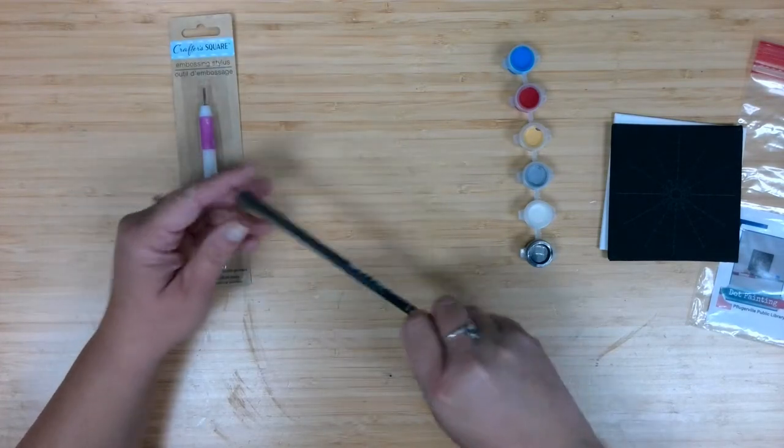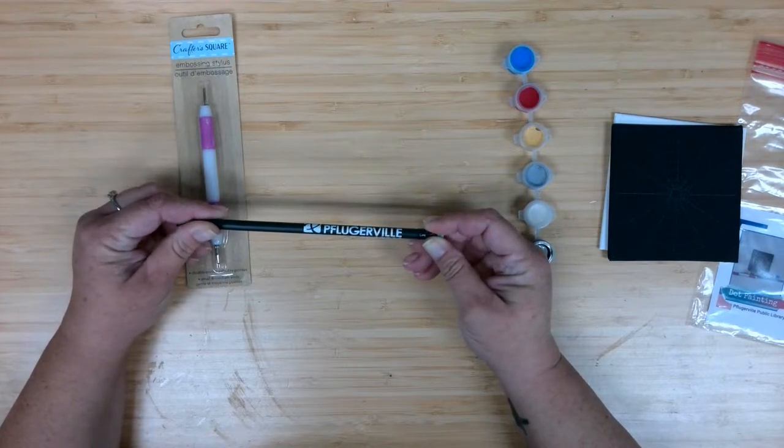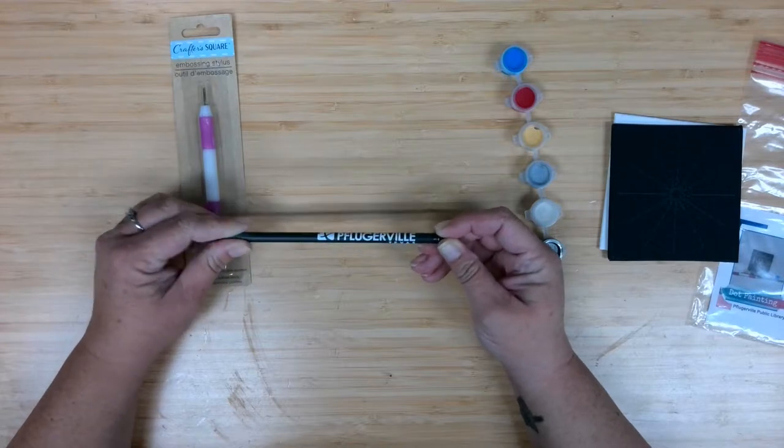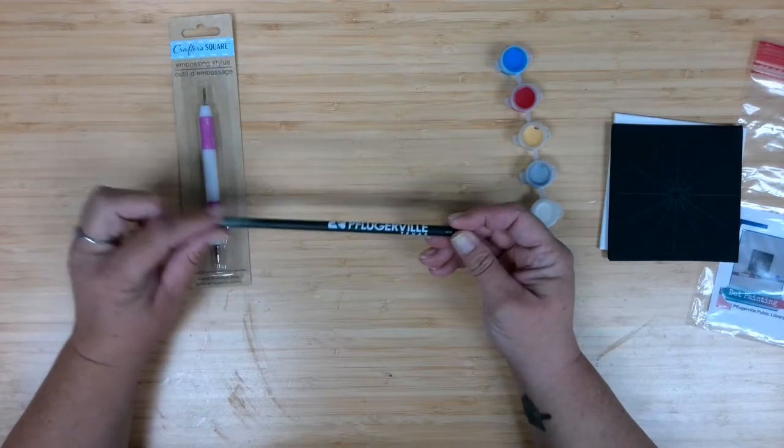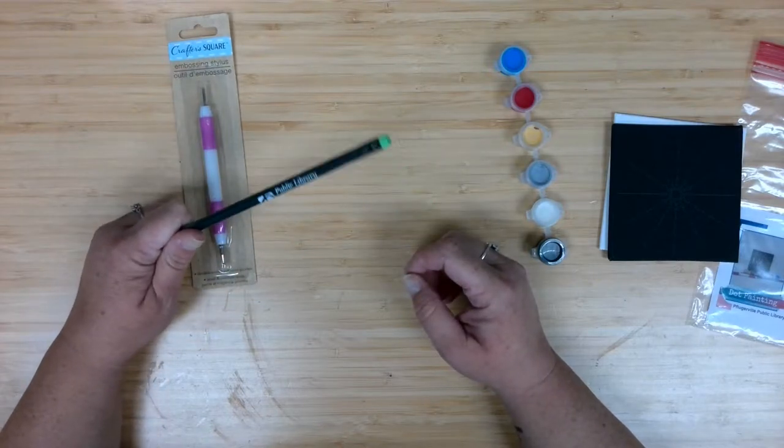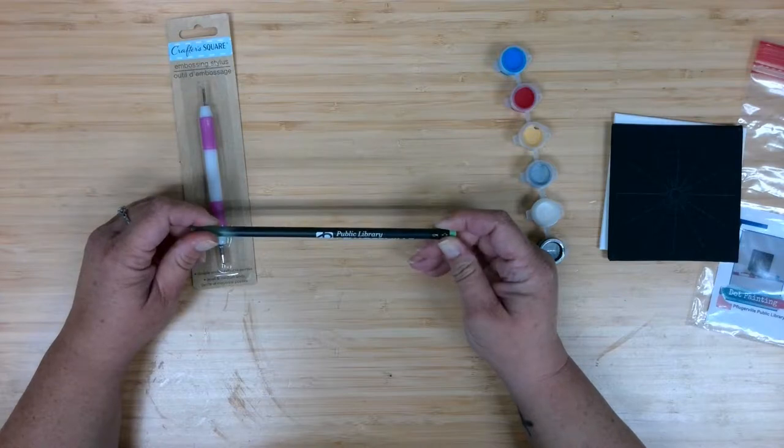And the final piece in our kits this month is one of our wonderful Pflugerville Public Library pencils that is actually color changing. So as you hold it, the pencil itself will start to turn green. But we're going to use the eraser as a dotting tool for this project. And then once you're all done, you can clean it up and just have a great library pencil.